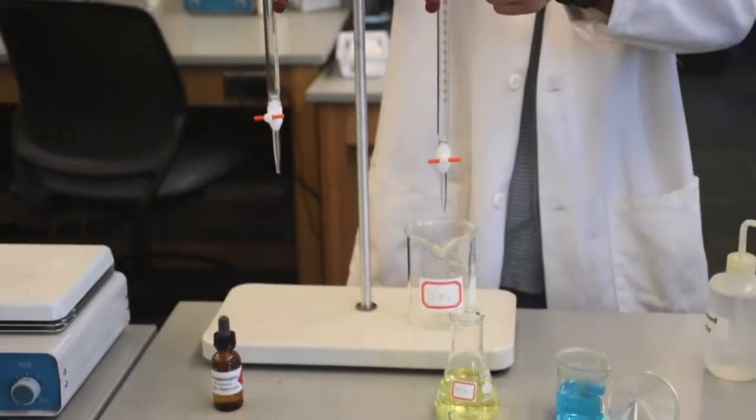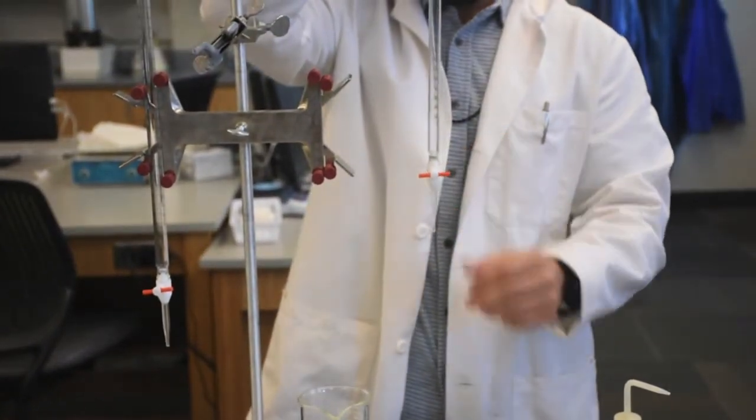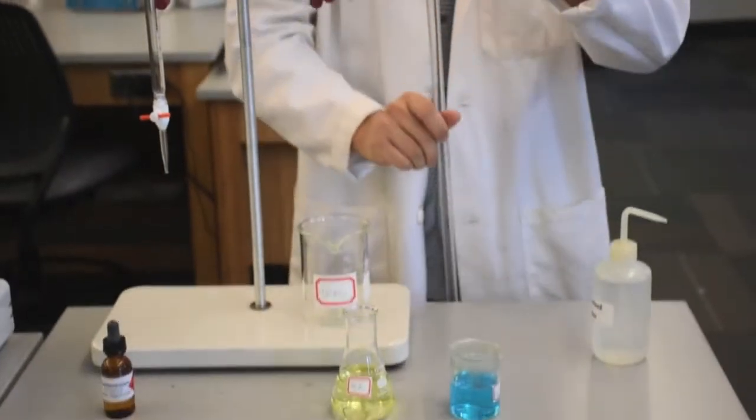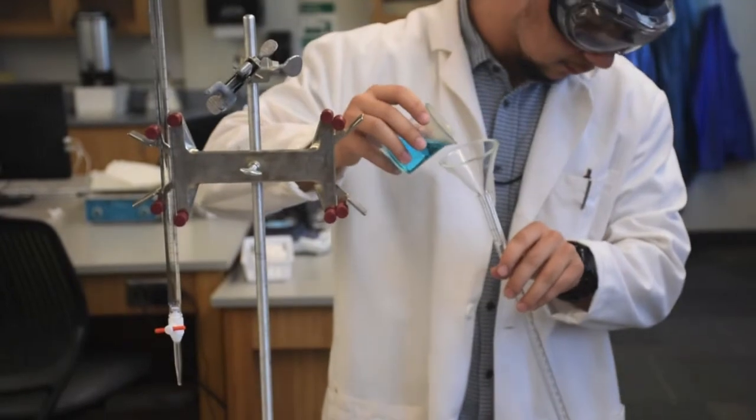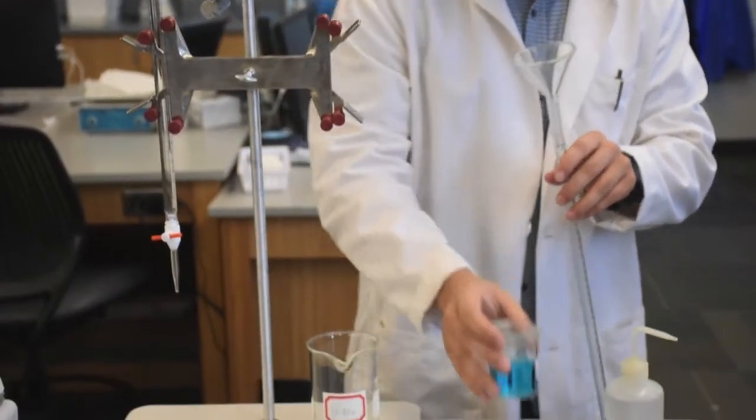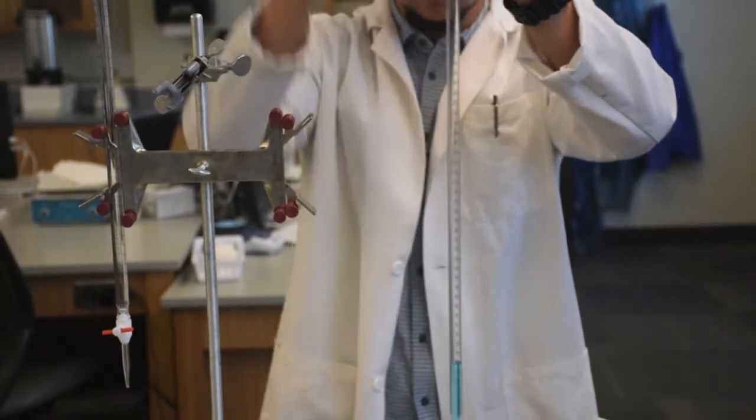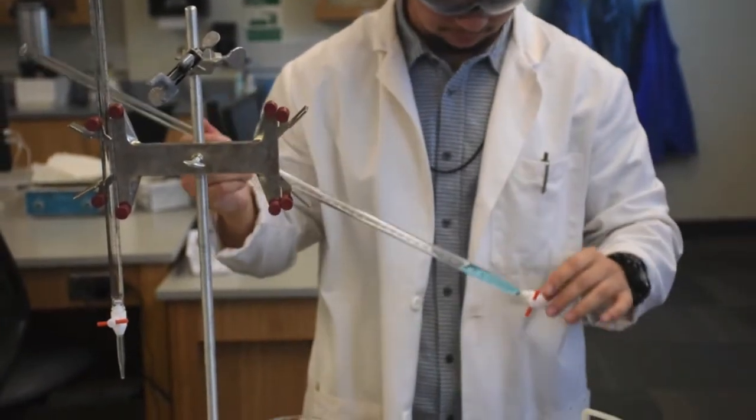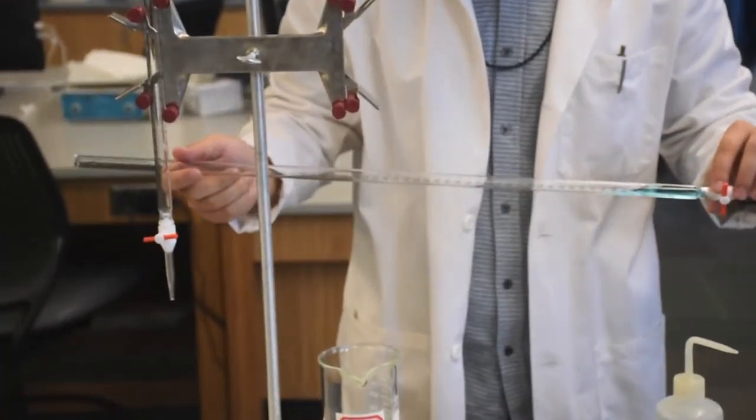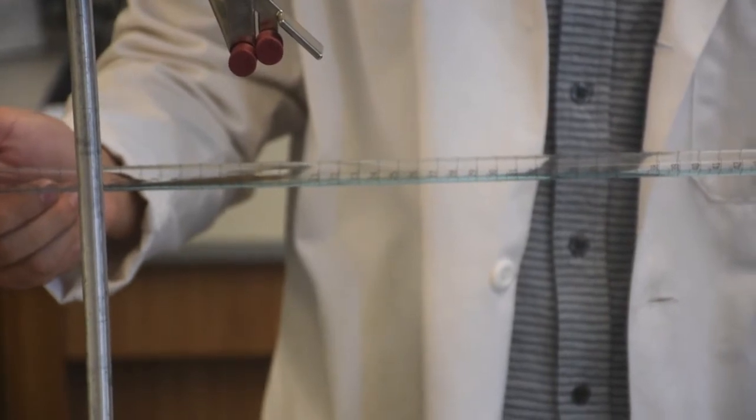Let's now coat the inside of the burette with the titrant. Make sure the stopcock is in a closed position with the stopcock perpendicular to the glassware. Pour about 5 ml of titrant using a long stem glass funnel into the burette and hold the burette on its side. You do not need to fill your burette to the top just yet. Using your hands, rotate the glassware providing maximum coverage for the titrant to coat the inside surface of the glassware.